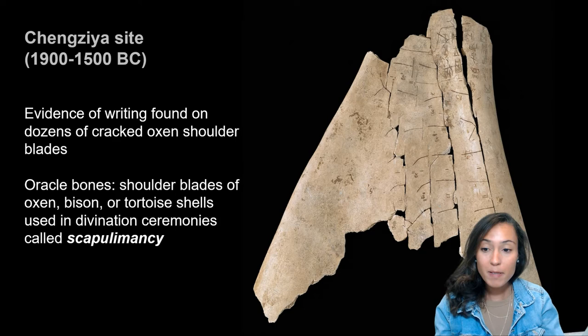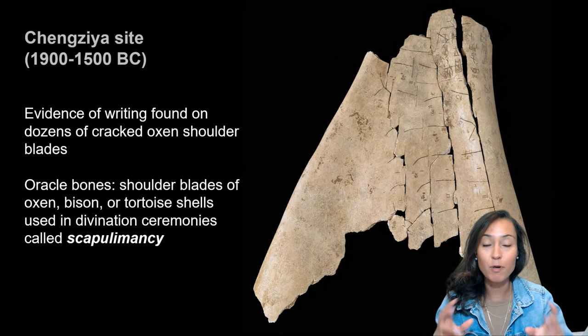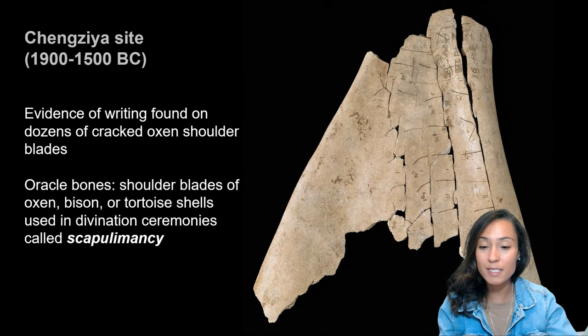What people did was to use the shoulder blades of oxen or bison, as well as tortoise shells, particularly scapula bones. These bones were part of a kind of ritual process intended to predict the future, called scapulomancy.